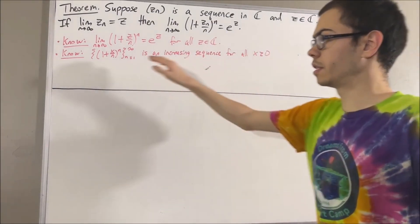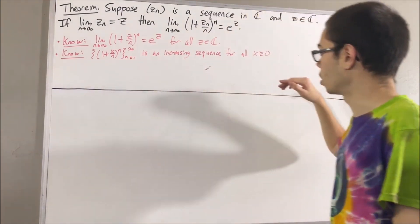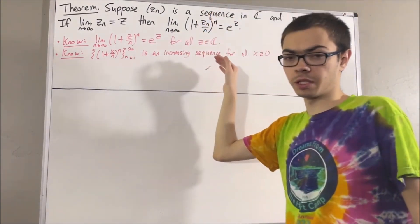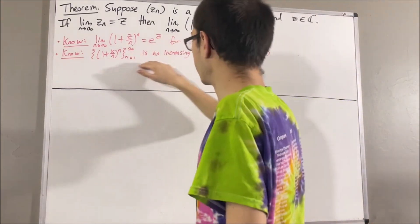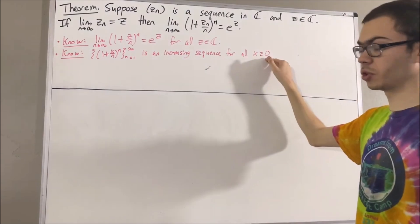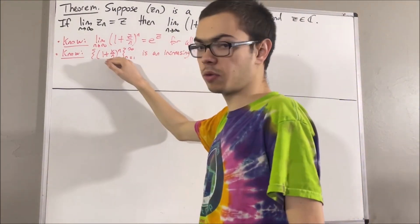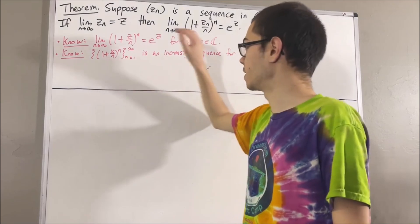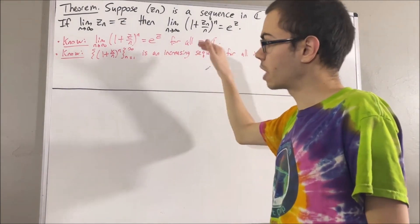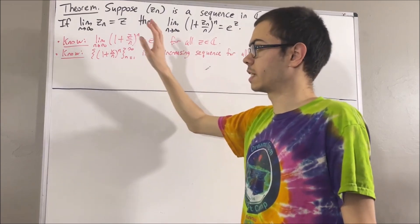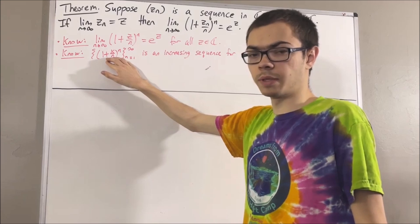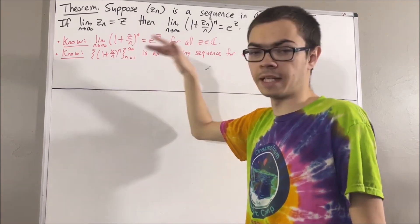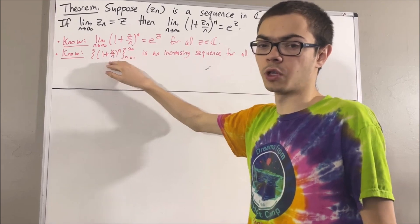If x is equal to zero, then this is just a constant sequence of ones. Otherwise, if x is strictly greater than zero, then we showed that this sequence must be a strictly increasing sequence. Because this sequence is an increasing sequence, we know by the monotone convergence theorem that the value it converges to must be the least upper bound of the terms. That value is e to the x, so e to the x is the least upper bound of the terms of the sequence.